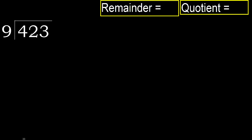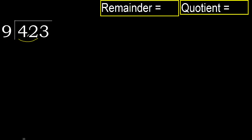423 divided by 9. 4 is less than 9, therefore move to the next digit. 42 is not less than 9, therefore we work with 42.